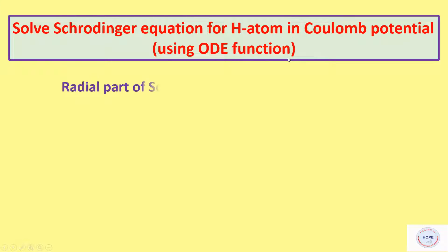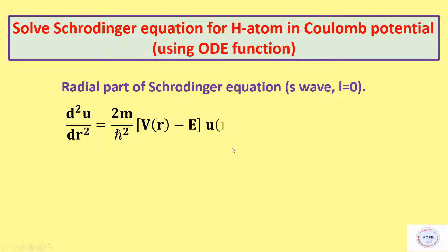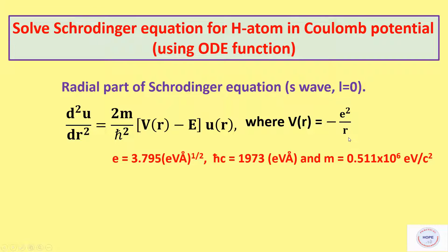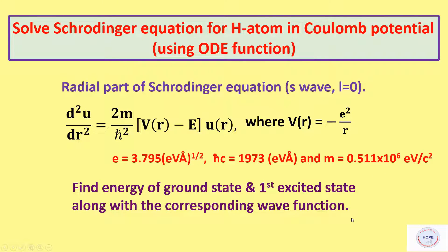We are taking radial part of the Schrödinger equation for L equal to 0. This is the Schrödinger equation and Coulomb potential is given by V equal to minus e squared by r. We are going to find the energy of the ground state and first excited state along with the corresponding wave functions.